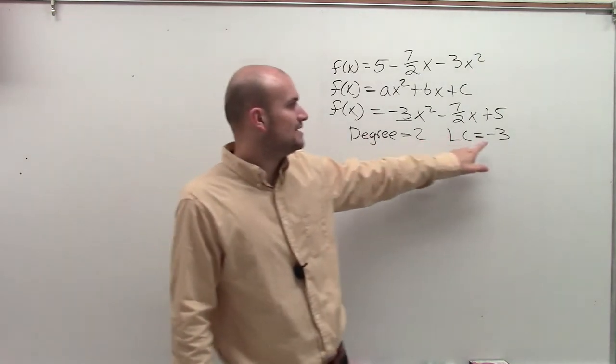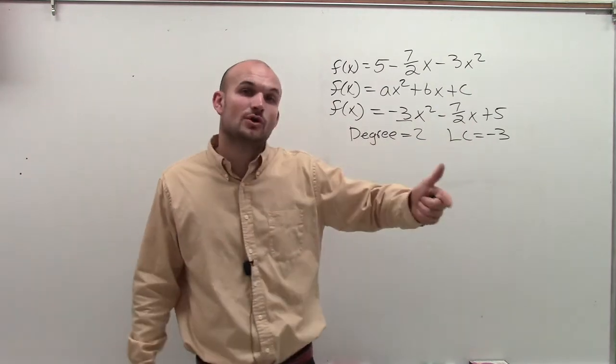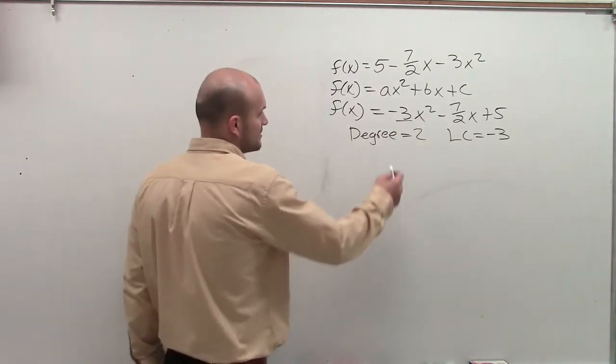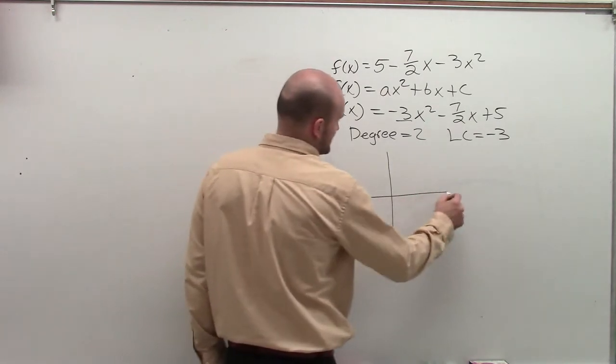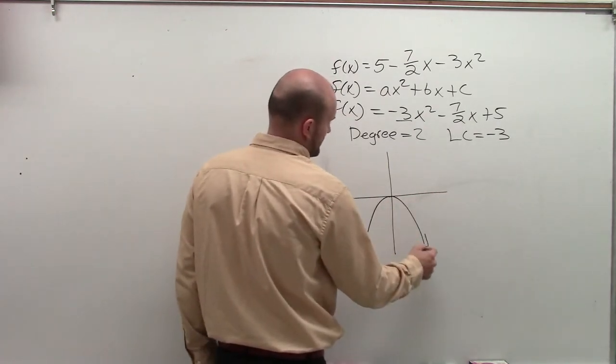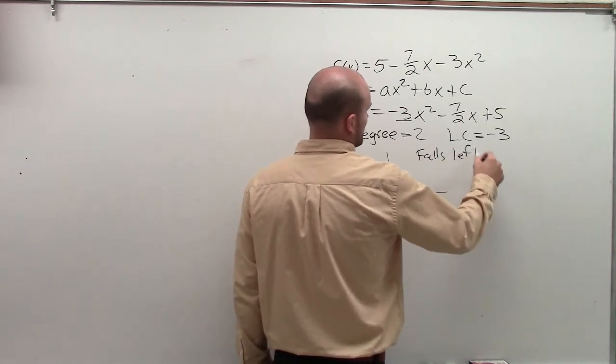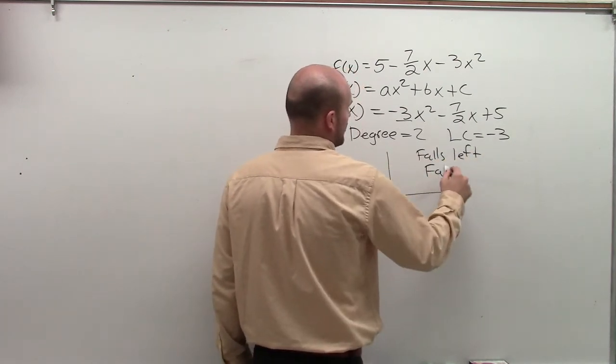Now, since my leading coefficient is negative by the leading coefficient test, I know my graph is going to fall left and fall right. So my graph's going to look something like this, which we say falls left and then falls right.